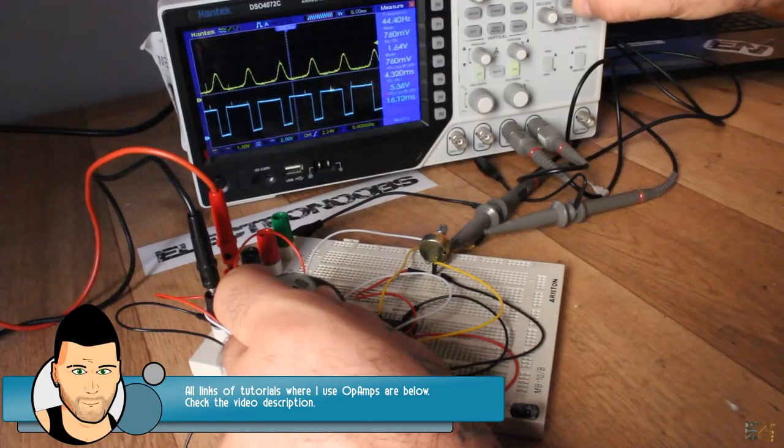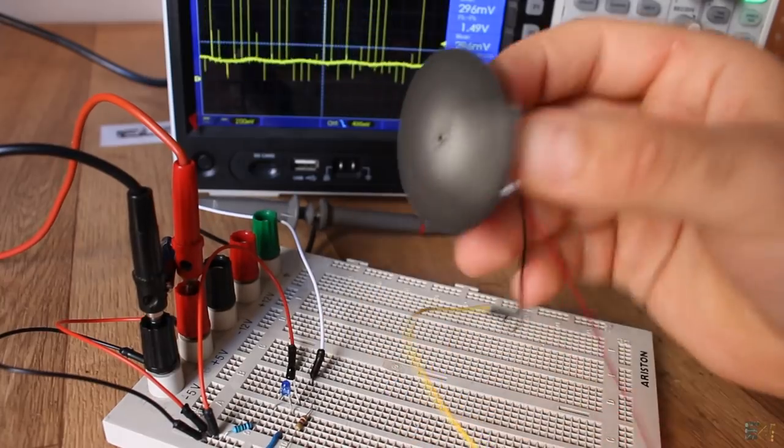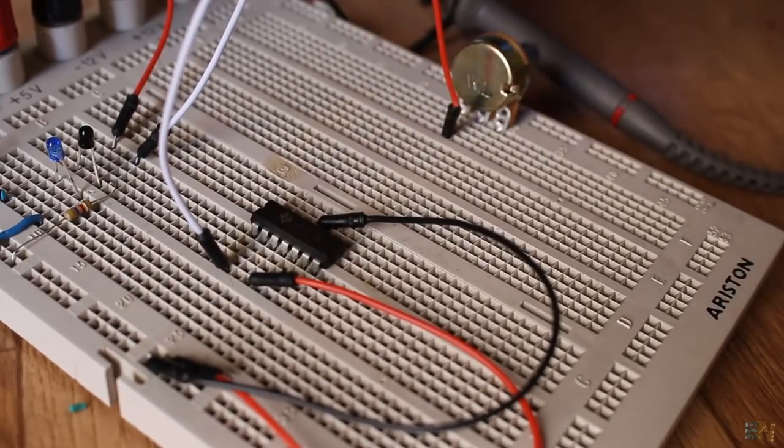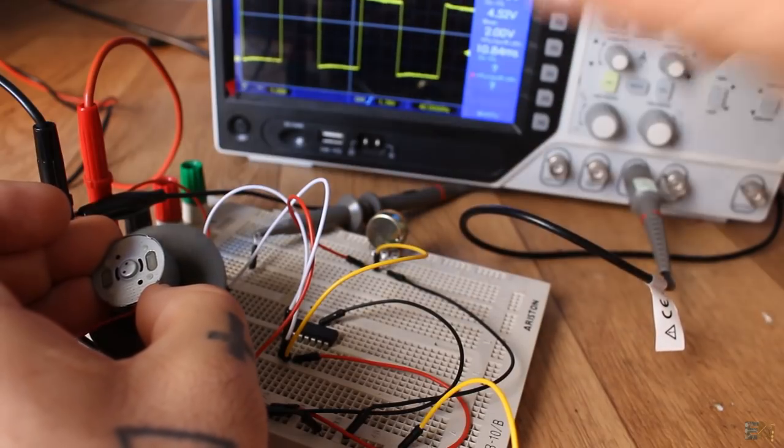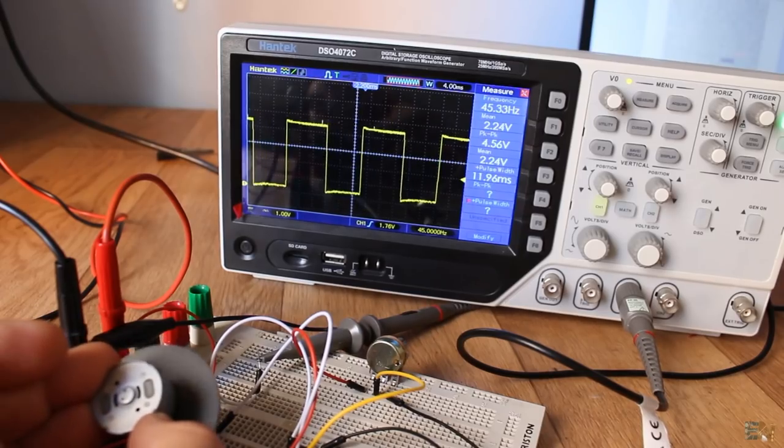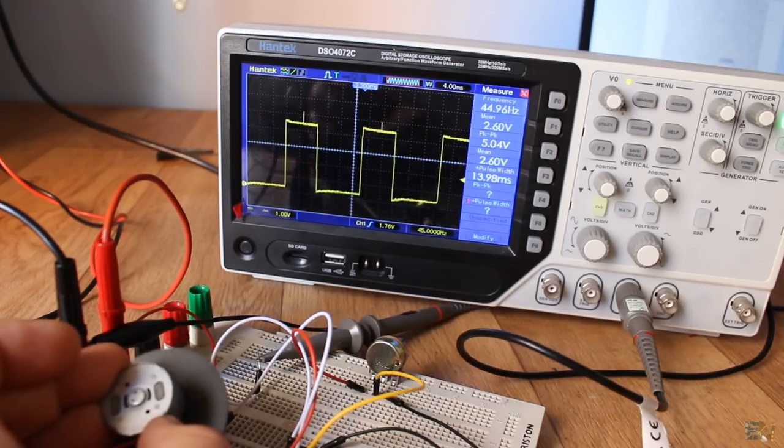But the signal it gives is very low and oscillating a lot, and the Arduino can't read that. In order to pass that signal to digital values that the Arduino could read, I've used this configuration, and set the negative input to a value right below the peak voltage that the sensor gives, and that resulted in a digital square wave that my Arduino could now read.